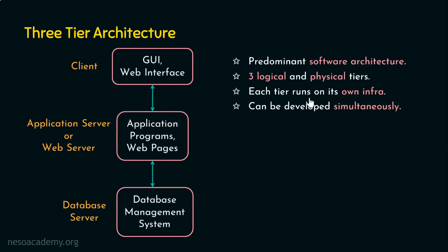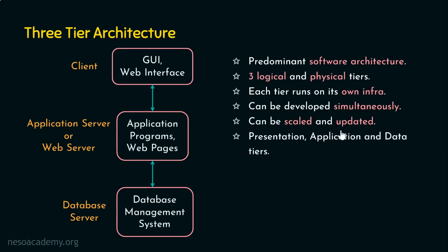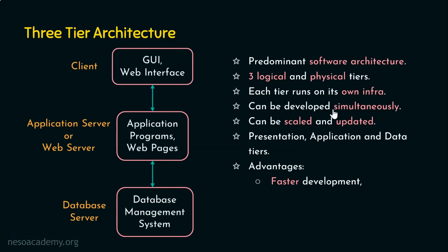Another advantage is that these tiers can be scaled and updated individually. We can give names to these tiers: the presentation tier (client tier), the application tier (middle tier), and the data tier (bottom-most tier, the physical storage of the database). The main advantages are faster development, since tiers can be developed simultaneously, and improved scalability, reliability, and security.